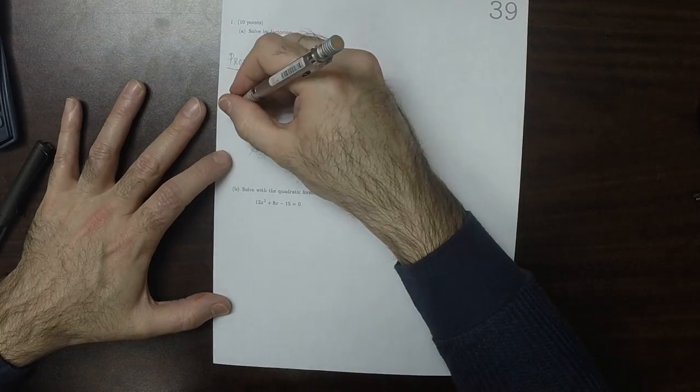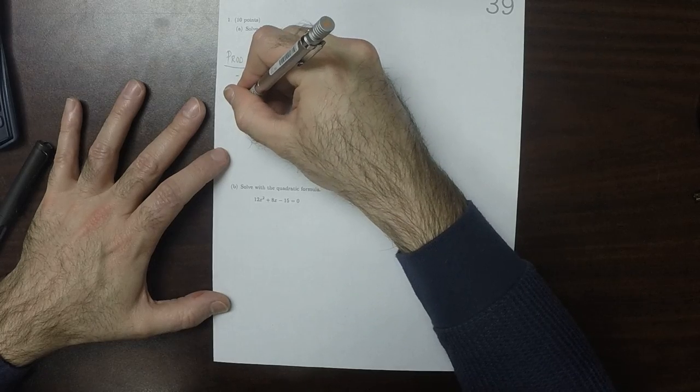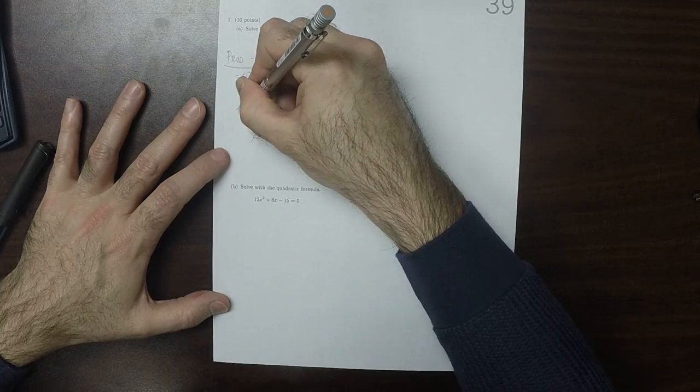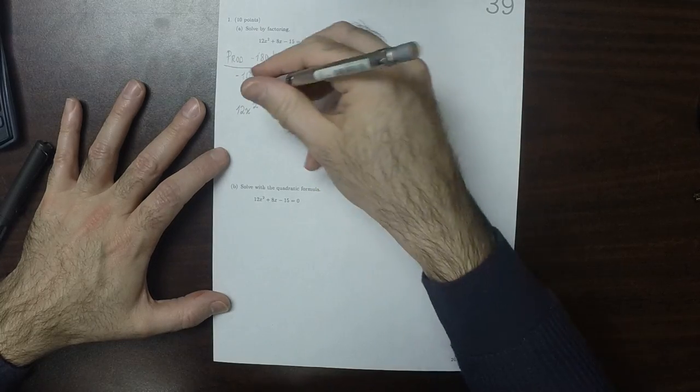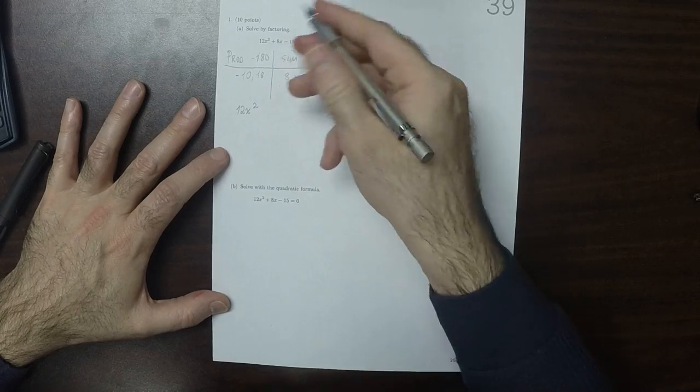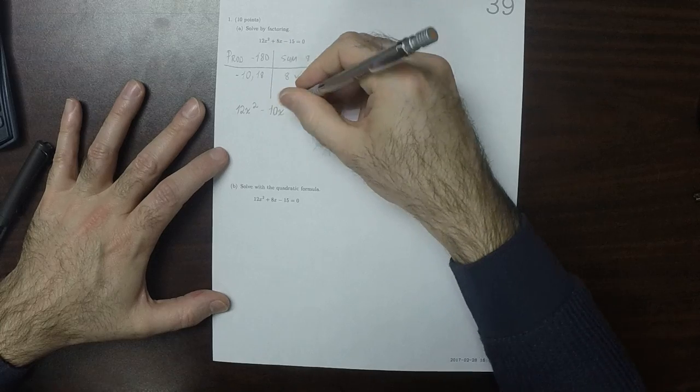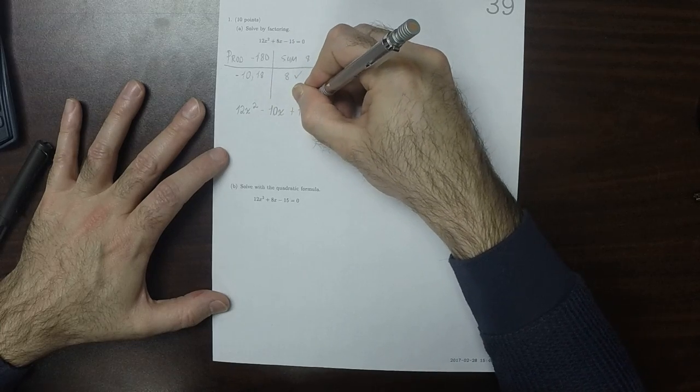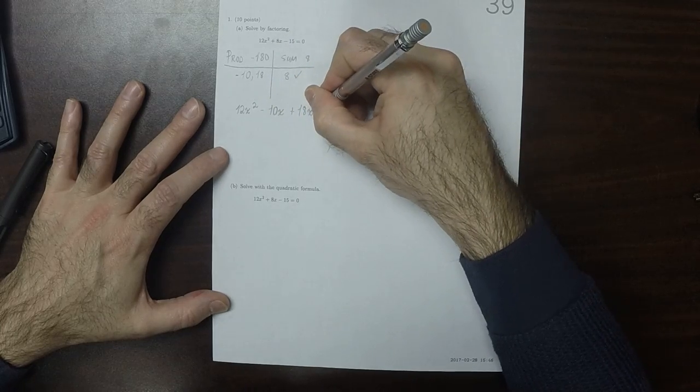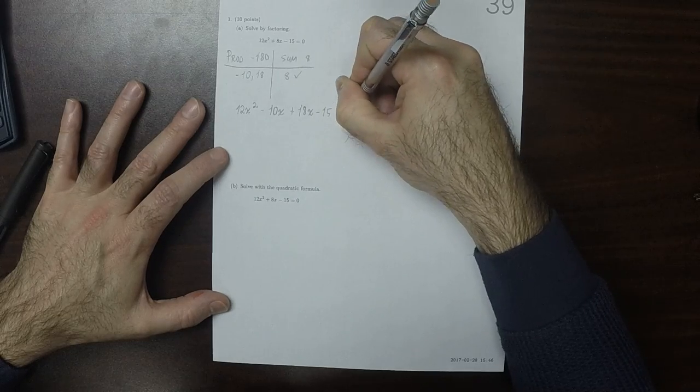Terrific. So that means that we're going to split the middle term of the quadratic into negative 10 and positive 18. So negative 10x, positive 18x, and then minus 15, equal to 0.